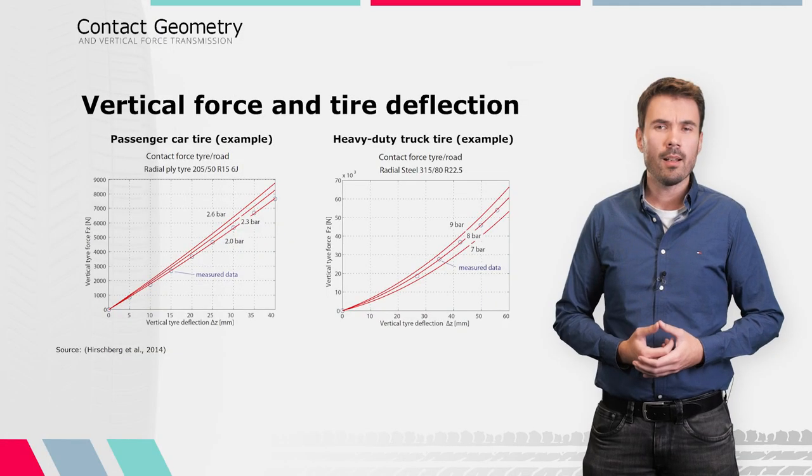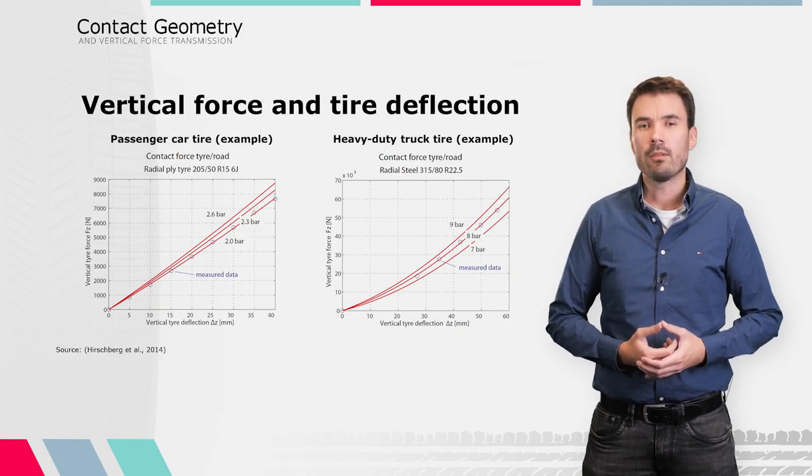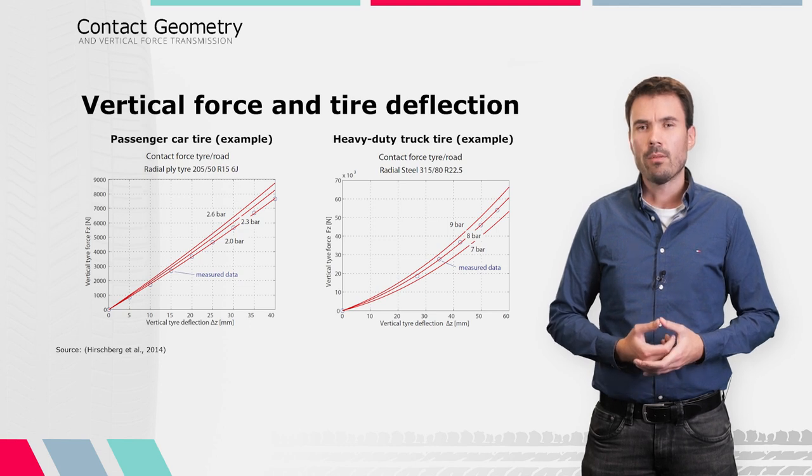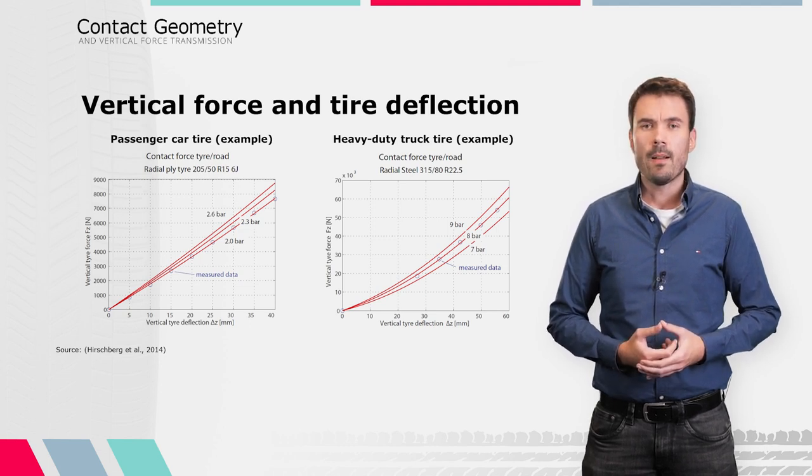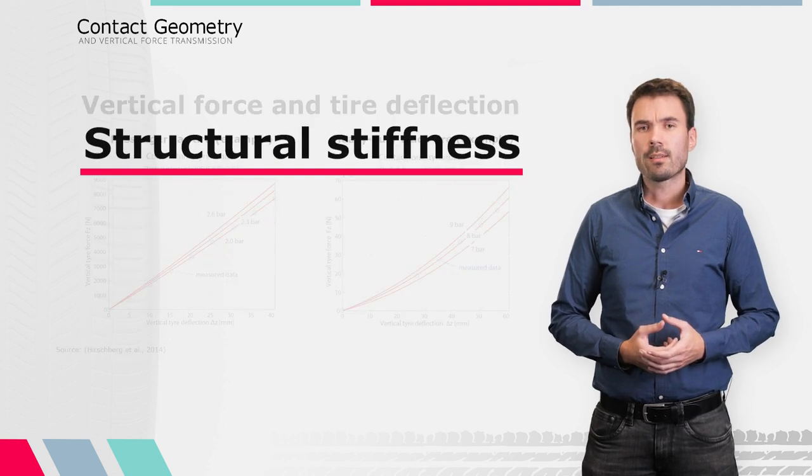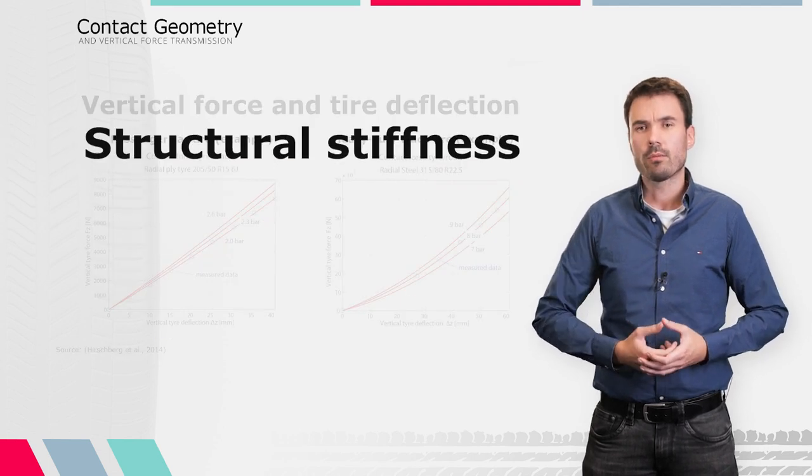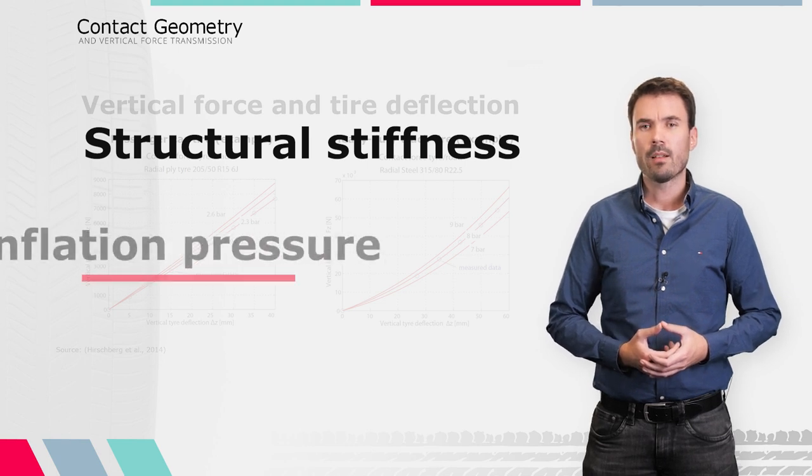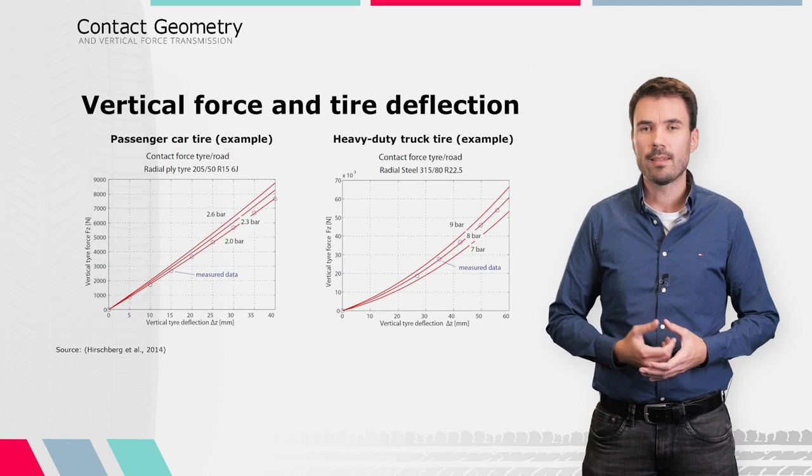And for a truck tire, it is in the range of 1000 kN per meter. The overall vertical stiffness of a tire depends on two main factors. First, on the structural stiffness of the carcass, which depends on the tire's construction. And second, on the inflation pressure, as you can see here.